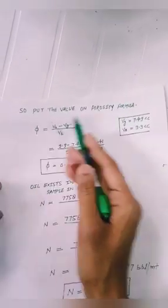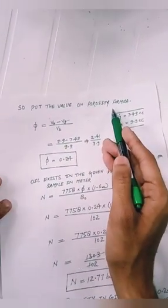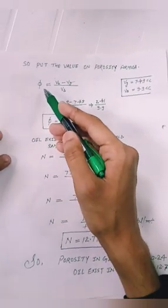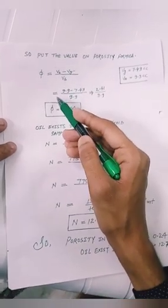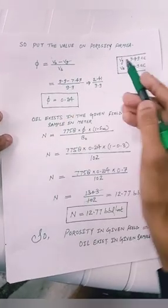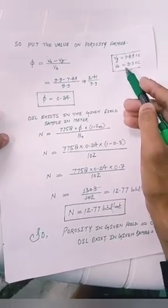So put the value on porosity formula. Phi equals VB minus VG upon VB. Equals to, put the bulk volume, we can write on this side paper.